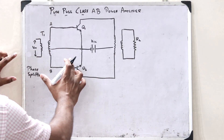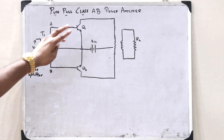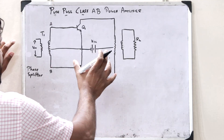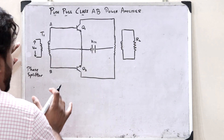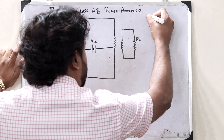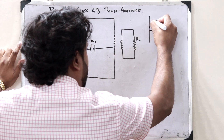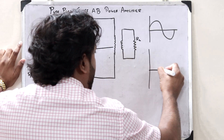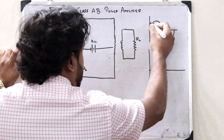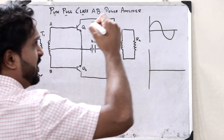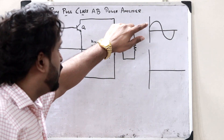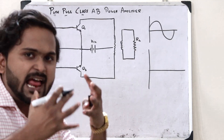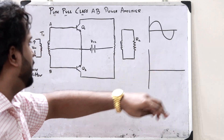This here is the diagram of a class B power amplifier. We know for a fact that in the case of a class B power amplifier, when we give a particular input signal like this, we get an amplified output signal for the entire input signal — that is, for both the positive half as well as the negative half, we'll get an amplified output signal over here.